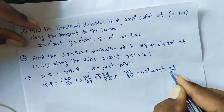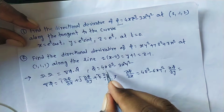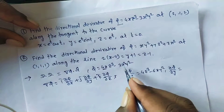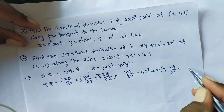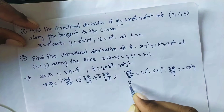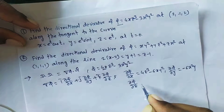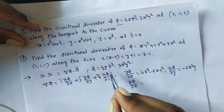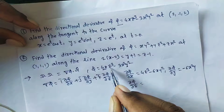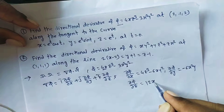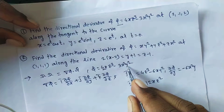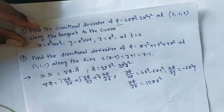Similarly, ∂φ/∂y: with respect to y, x and z are constant, so the derivative of the first term is 0, and the derivative of y² is 2y, giving −6x²y. And ∂φ/∂z: with respect to z, x is constant, so derivative of z³ is 3z², giving 12xz². The last term's derivative with respect to z is 0.